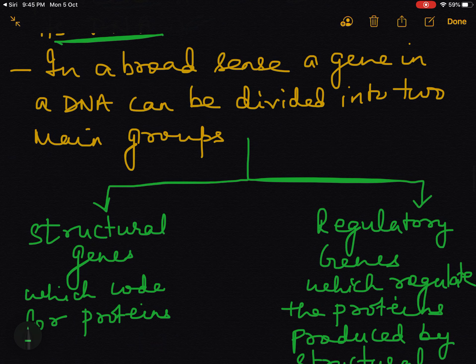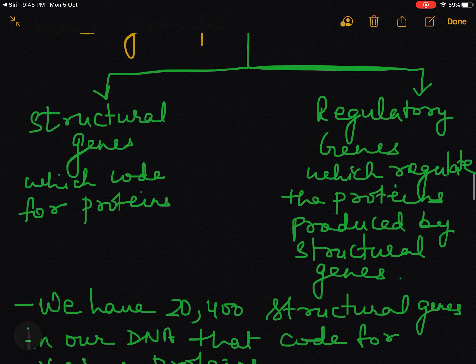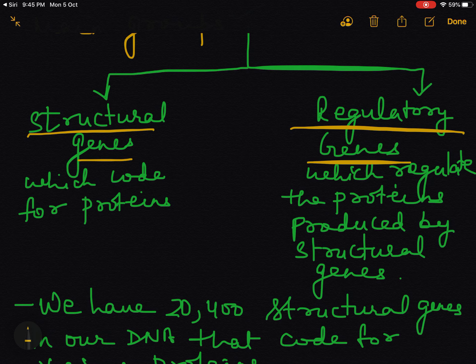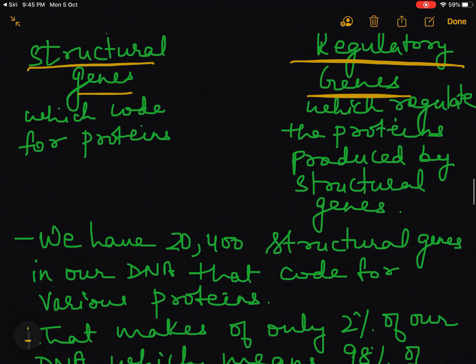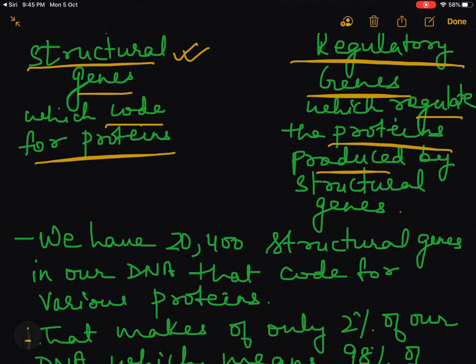In a broad sense, a gene in DNA can be divided into two main groups. The first one is structural gene - you've read about transcription and translation. We call them structural genes because these are the genes which will code for particular proteins. What are regulatory genes? These are the genes which regulate the proteins produced by structural genes.